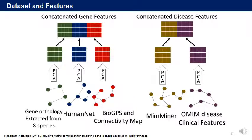The ground truth gene-disease associations are assembled from the OMIM database. There are 3,954 known gene-phenotype associations extracted, spanning 3,209 disease phenotypes and 12,331 genes.